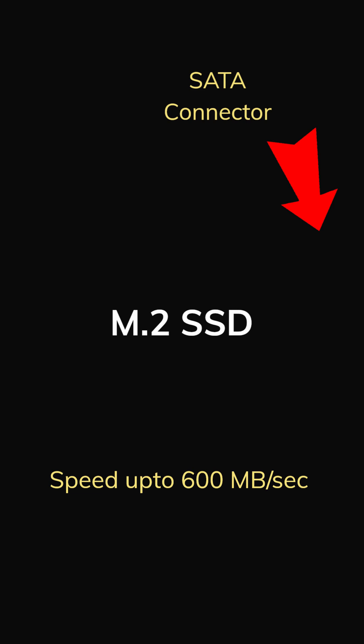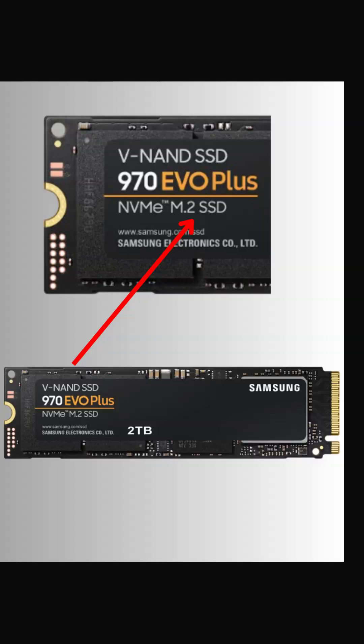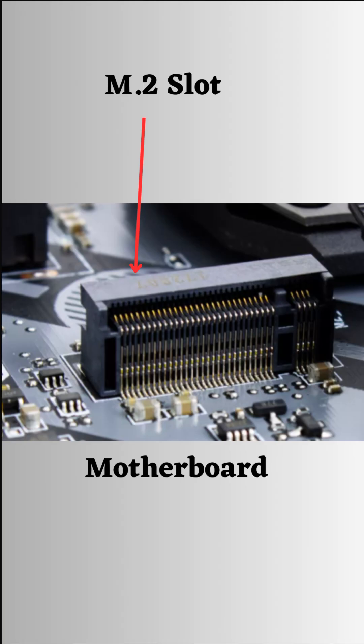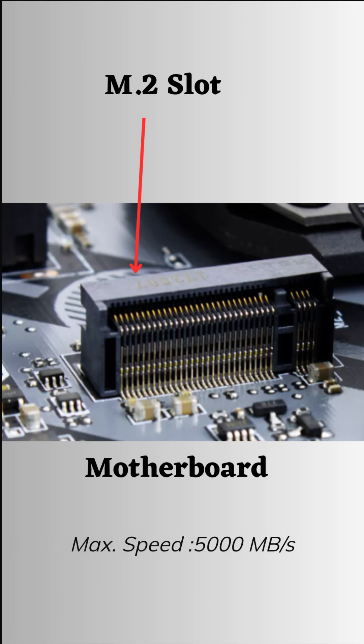The second type is the M.2 SSD. The M.2 SSD is a more efficient and newer alternative to the 2.5-inch SATA SSDs. It can be installed in an M.2 slot on the motherboard directly.